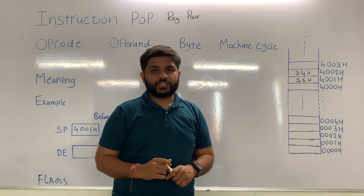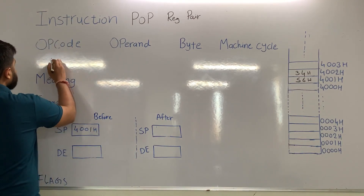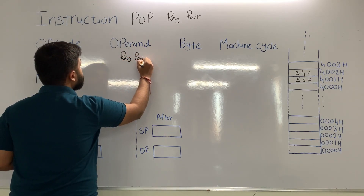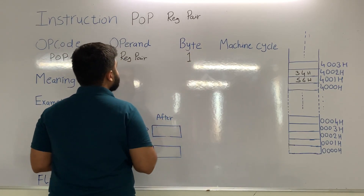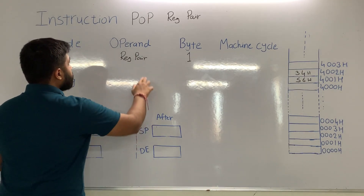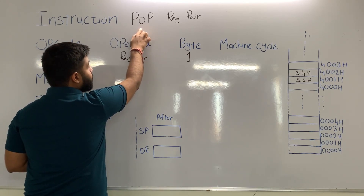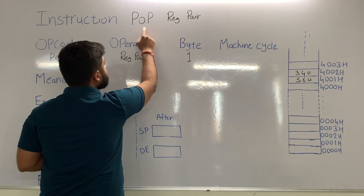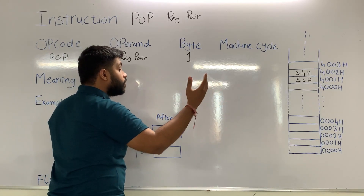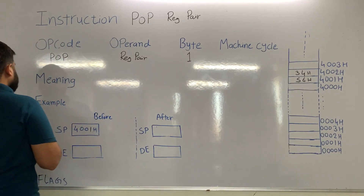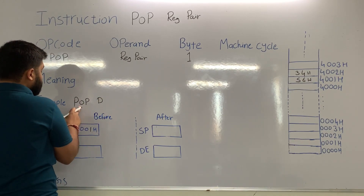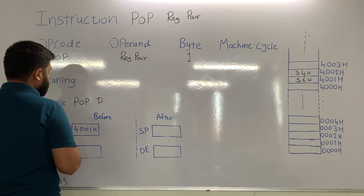Now we are going to see the instruction POP register pair. For this instruction, the opcode is POP and the remaining part is the operand, which is the register pair. No data is present, so this instruction is one byte. The meaning of the instruction is: pop the content of the stack to the register pair. When this instruction is executed, data from the stack will be transferred to the register pair. One example is POP D — it means pop the content of the stack to the DE pair.